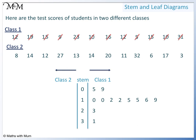Firstly, we look for values with 0 tens: 3, 6, and 8. Values with 1 ten are 11, 12, 13, then two 14s, shown with two 4s.